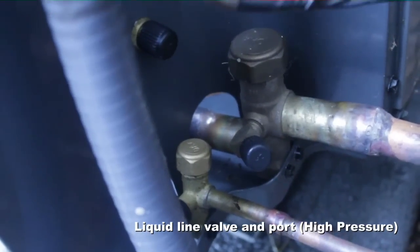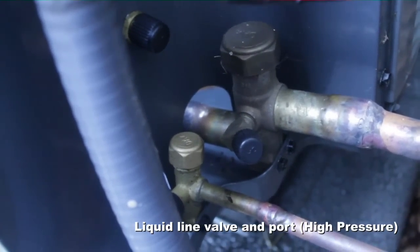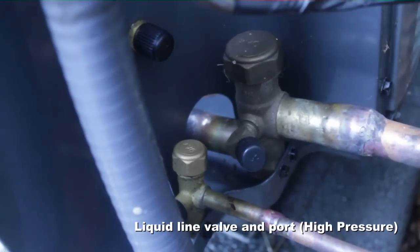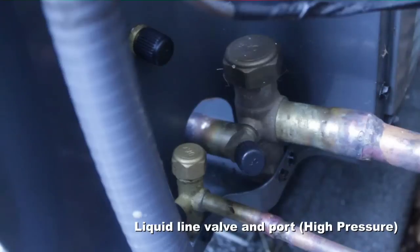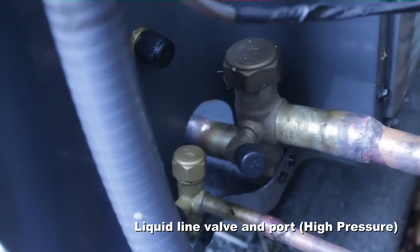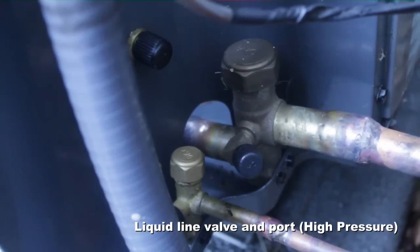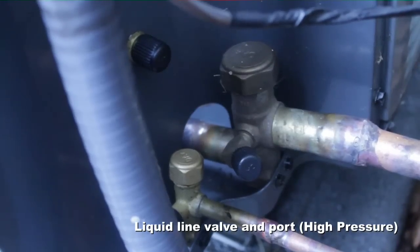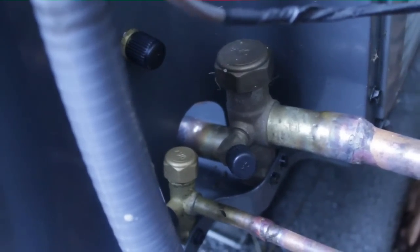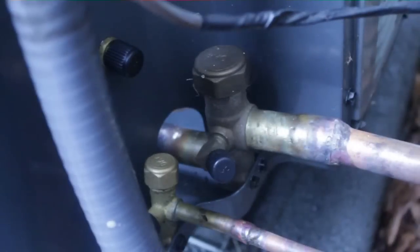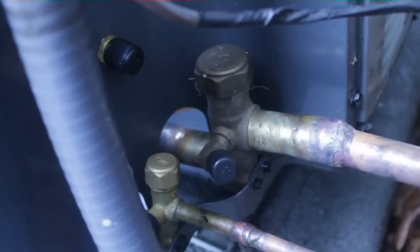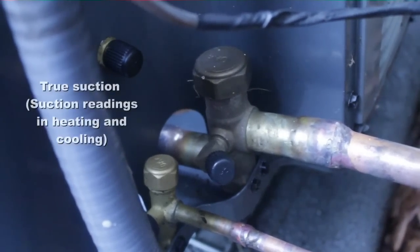In heating, it's flowing in the opposite direction. That is why we have bi-flow filter dryers. It is coming back from the condenser, which is now at the air handler or furnace in a dual fuel system. In both cycles, it is the liquid line.